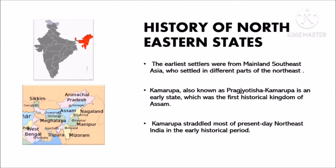The earliest settlers from mainland Southeast Asia settled in the different parts of the Northeast, belonging to the Austro-Asiatic language speaking community. Post that, Tibeto-Burmese people from China settled in the region. During 500 BC, Indo-Aryans from the Gangetic Plains arrived in the region. Kamarupa, also known as Pragjyotishiya Kamarupa, is an earlier state which was the first historical kingdom of Assam. Kamarupa covered most of the present-day Northeast India in the earlier historical period. The historical kingdom disappeared by the 12th century and got replaced by smaller political entities.